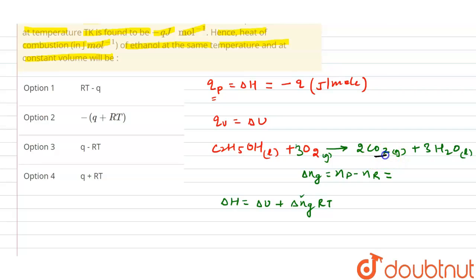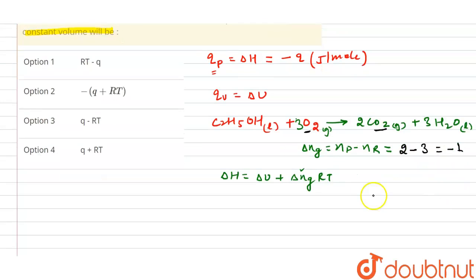If you see the gaseous species that we have here, CO2 has two moles in the product. These liquids will not be considered. O2 has how many moles in the reactant? Three. So overall, Δng equals minus one.